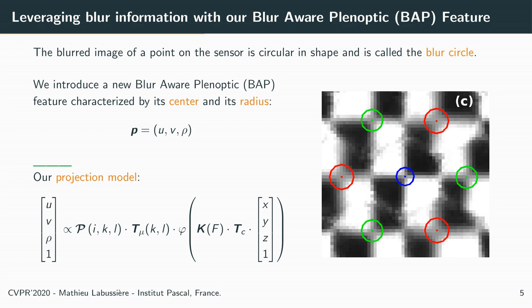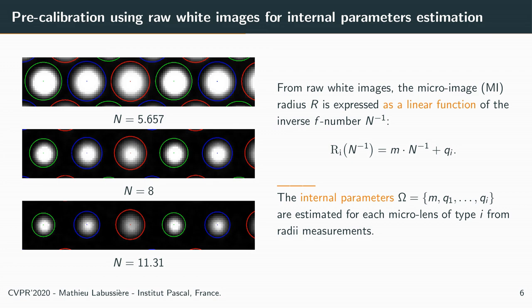The scene point is linked to our features through our projection model. We introduce a pre-calibration step that helps us determine some internal parameters needed to compute our features in image space. While taking white images at multiple apertures, the micro-image radius R is expressed as a linear function of the inverse F-number, with slope m and y-intercept qi. We define the internal parameters omega as the set of these coefficients, which are estimated for each micro-lens of type i from radius measurements.